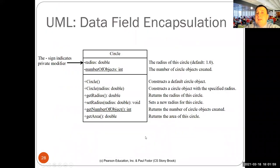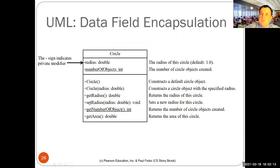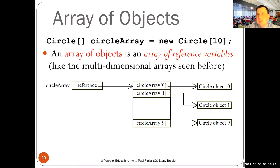Minus in UML stands for encapsulation — the data field is private — and in order to access it you need get and set methods: get to retrieve the value, set to assign a new value with constraints.